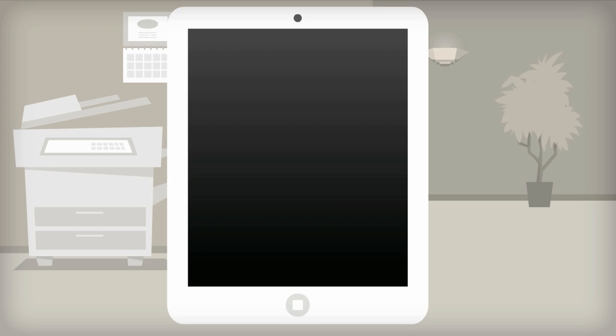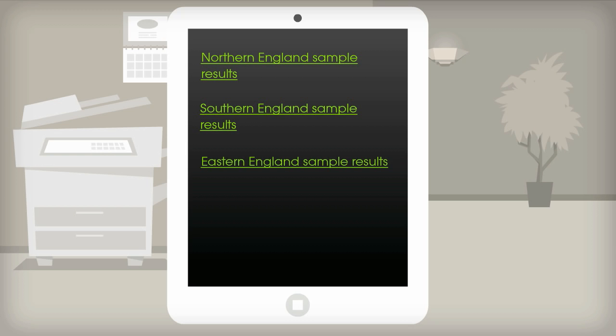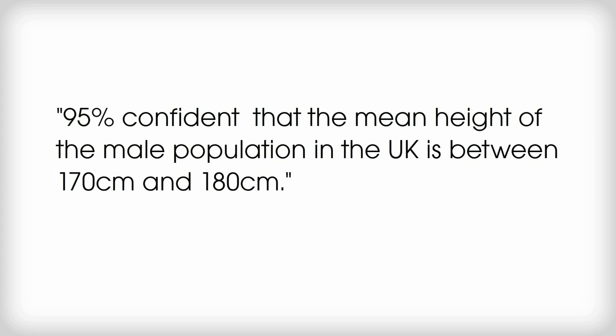Suppose we sample several groups of 100 men across the UK and measure their height. Using this data, a statistician calculates that she's 95% certain that the mean height of the male population in the UK is between 170 and 180 cm.